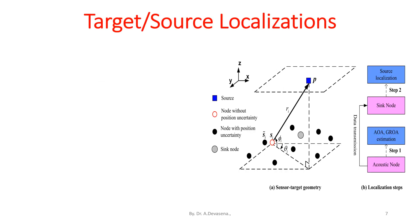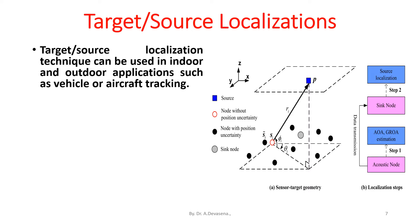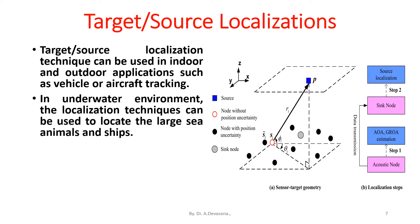Target or source localization techniques can be used in indoor and outdoor applications such as vehicle or aircraft tracking. In underwater environments, the localization techniques can be used to locate large sea animals and ships. Energy-based, time difference of arrival, and angle of arrival are the popular techniques used in wireless sensor networks.